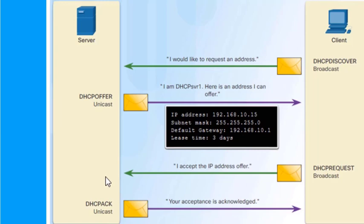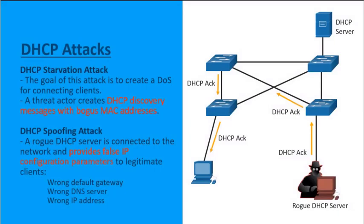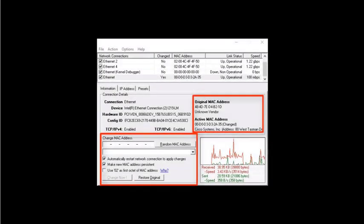There are two common types of DHCP attacks: DHCP starvation and DHCP spoofing. In a DHCP starvation attack, the goal is to create a denial of service for legitimate clients. The threat actor uses a client machine that rapidly cycles through source MAC addresses, gobbling up an available IP address from the DHCP server for each one.